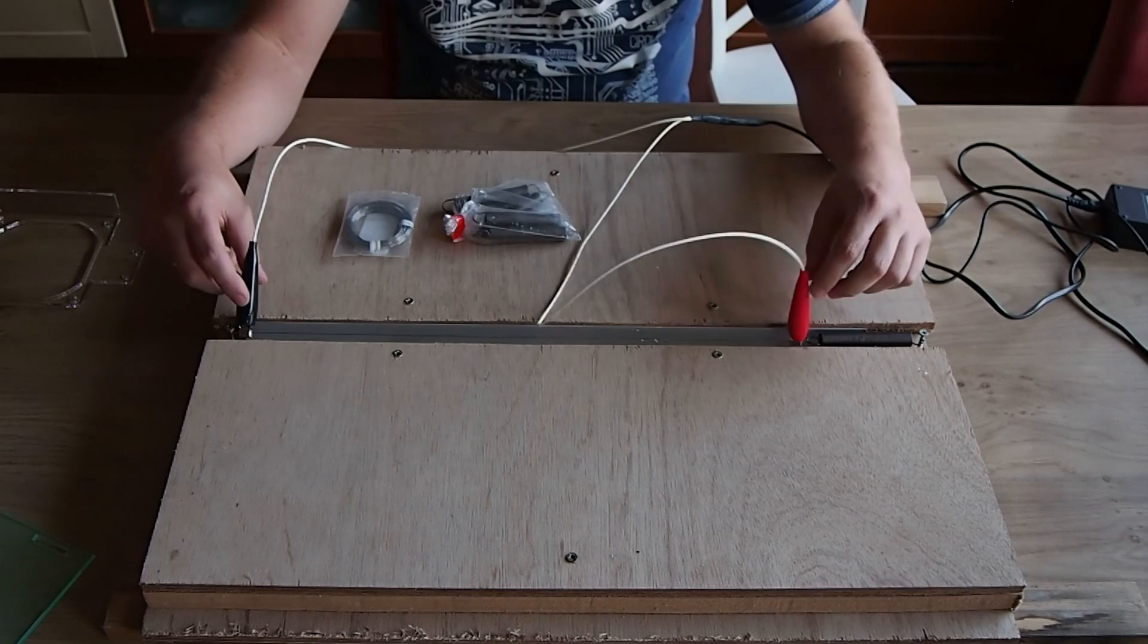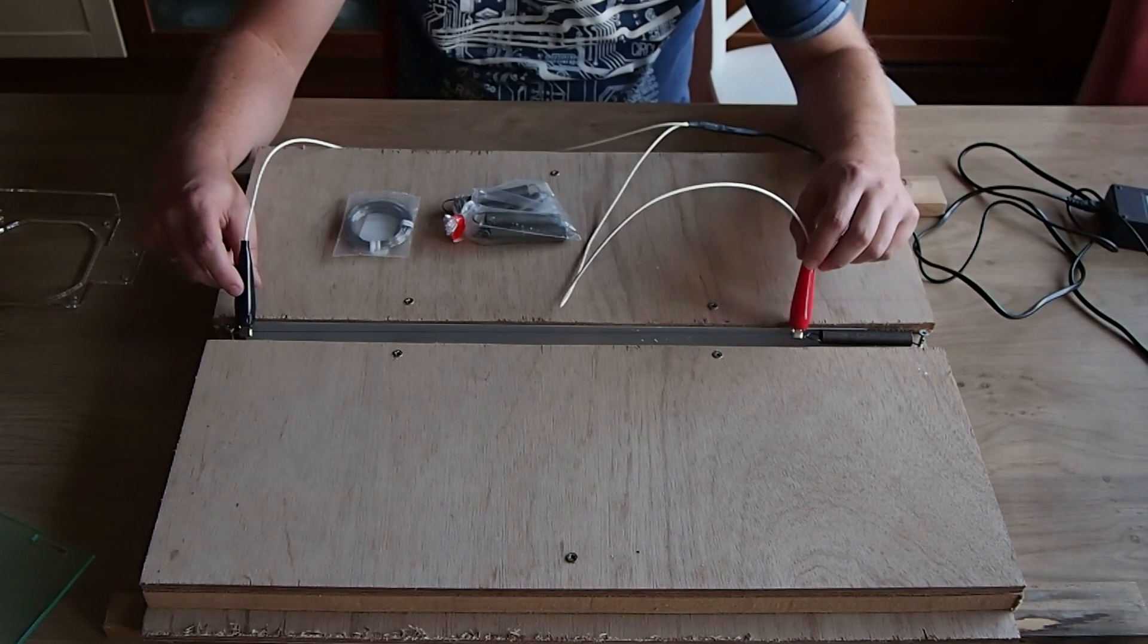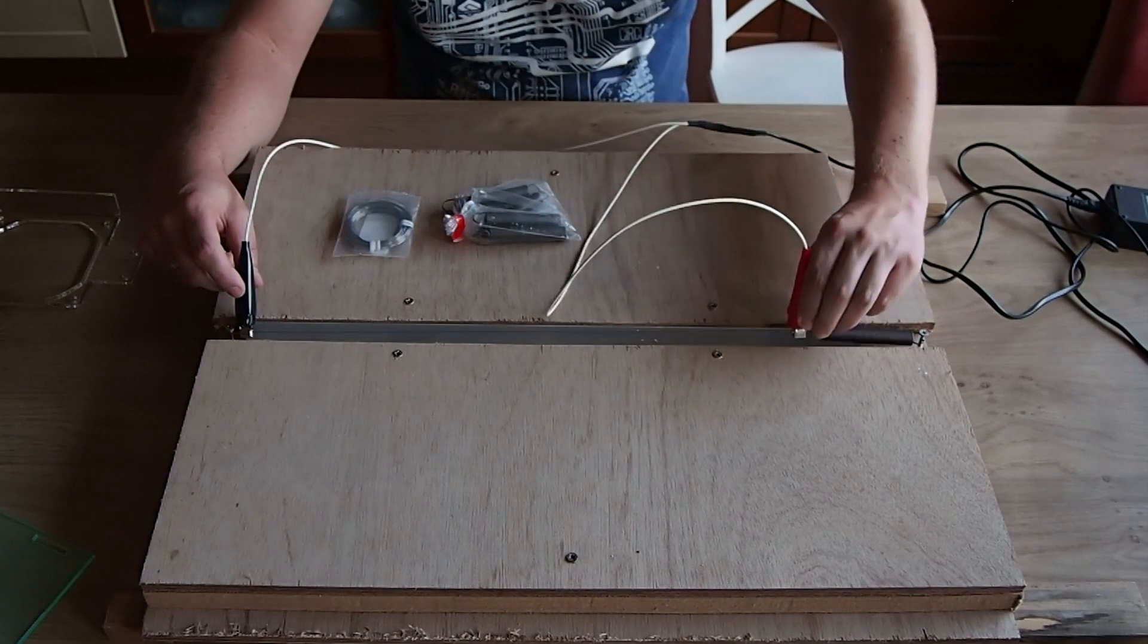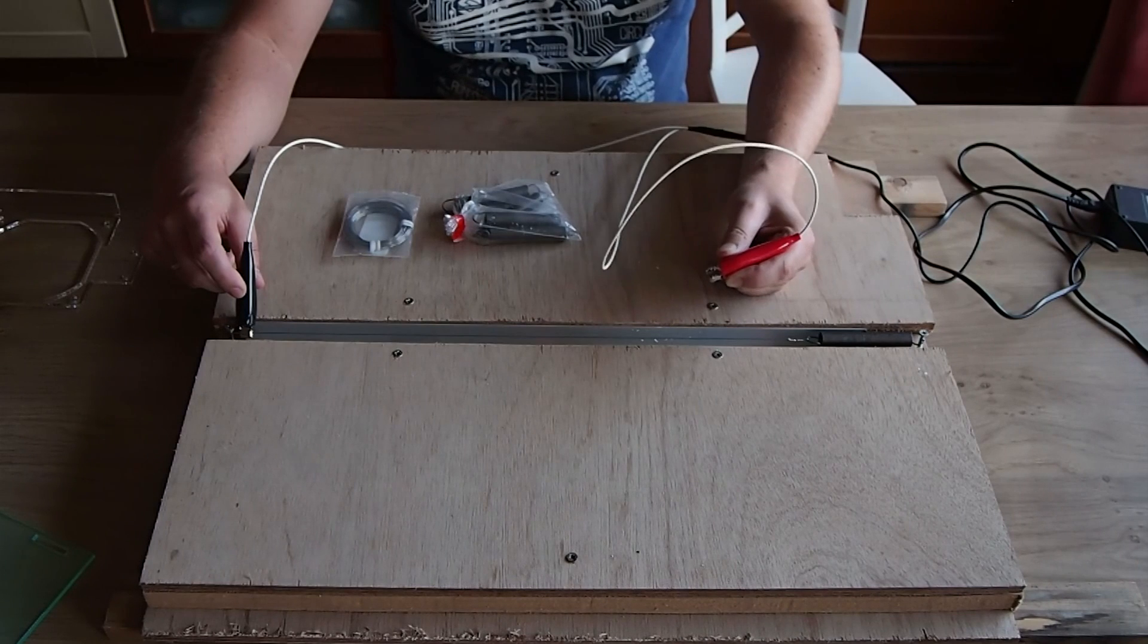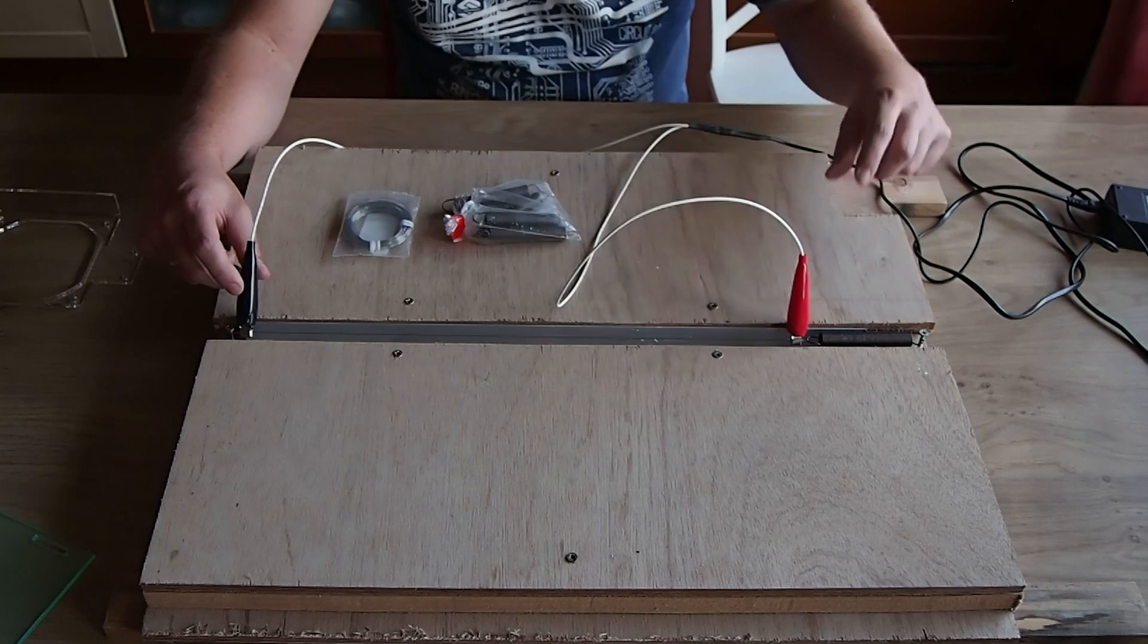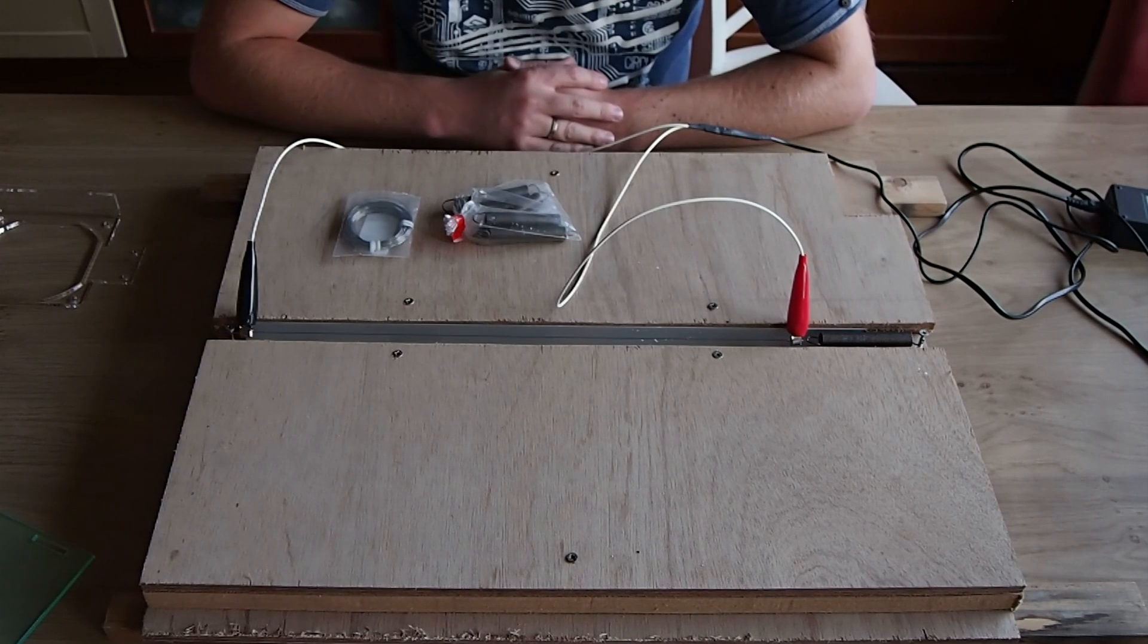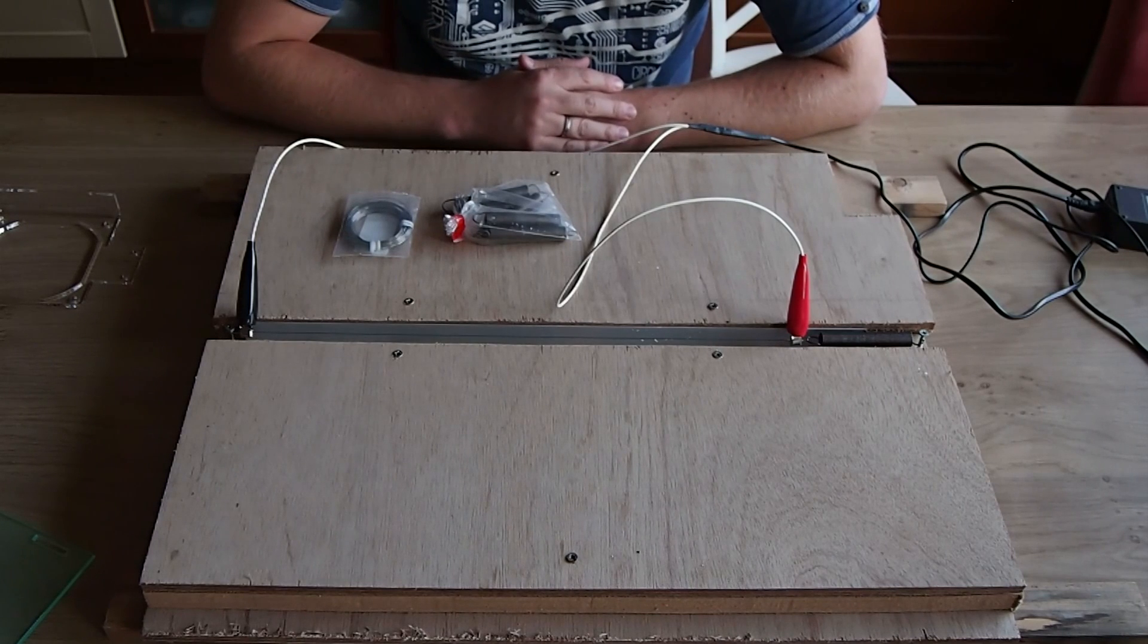And on each wire on the ends I put, in Holland they call these crocodile clamps. I have no idea what you call them in your country but they just bite onto the wire. Pretty much like a crocodile. And that's all you need. One left, one right. And then you plug in the adapter into the power source and the wire in between should get to a certain heat.